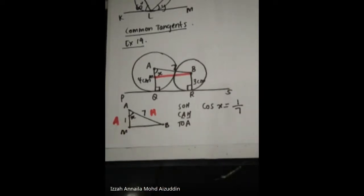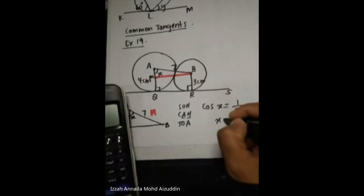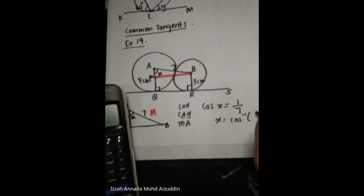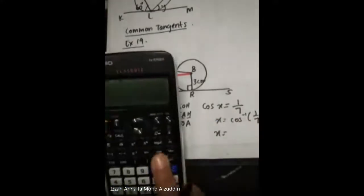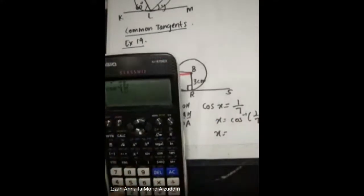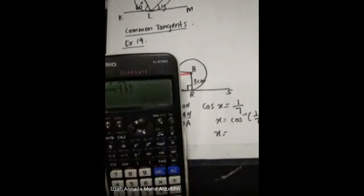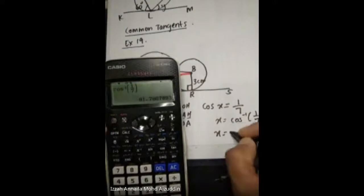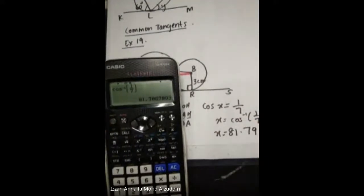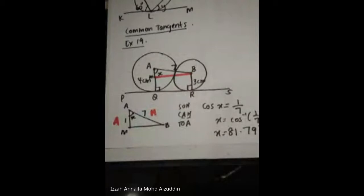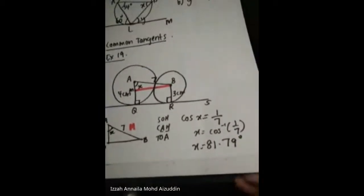How to get X? X equals shift cos of (1 over 7), which equals 81.79 degrees. That is the answer.